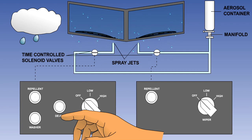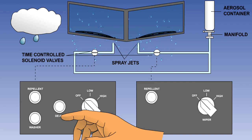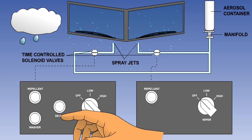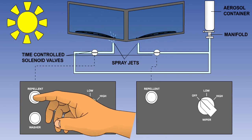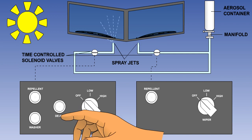The repellent reacts with the water, increasing the size of the water drops, which are then blown off the screen by the airflow. Depending on airspeed and rain intensity, each actuation should be adequate for two to five minutes of repellent action. Rain repellent fluid must not be applied to a dry windscreen as it will reduce visibility.